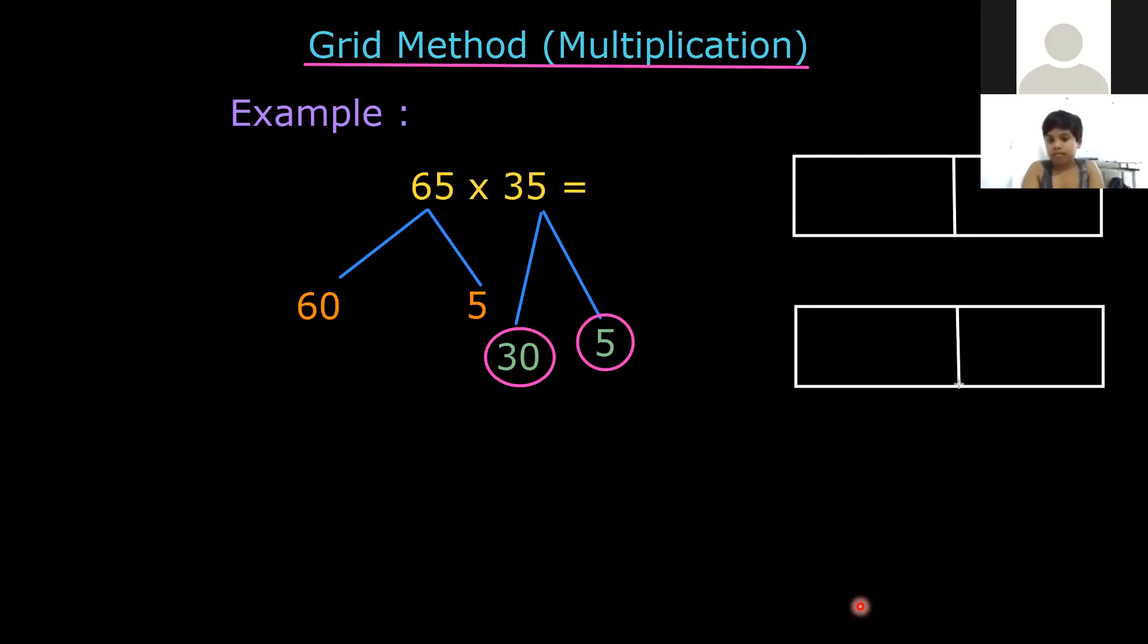You might be asking me: Teacher, why? Why are there only two boxes in each grid? Yes or no? Yes. Because, look here. We have two numbers here. Yes or no? We have two numbers here. Yes. So we have two boxes in the grid. Okay. If we have three numbers, we will have three boxes in the grid. Is it clear?